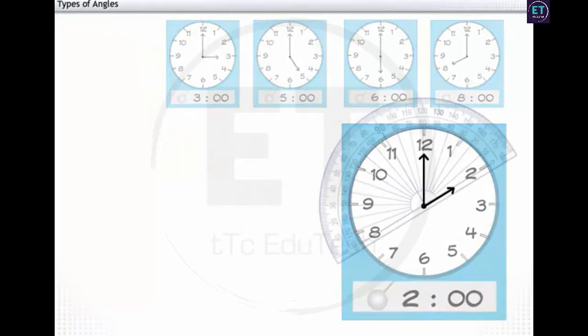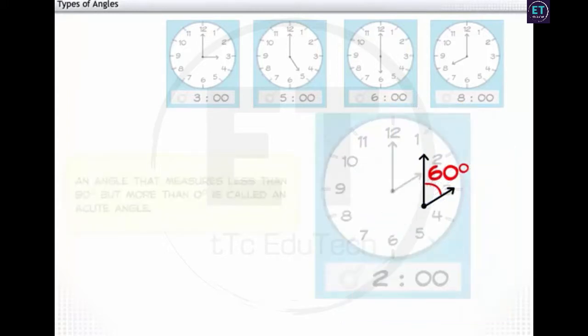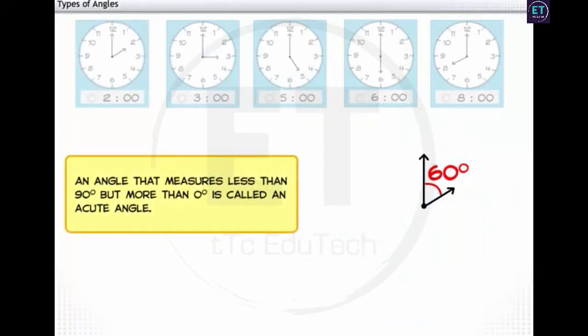At 2pm, the angle formed is 60 degrees. An angle that measures less than 90 degrees but more than 0 degrees is called an acute angle.